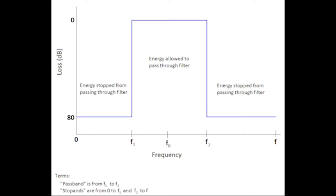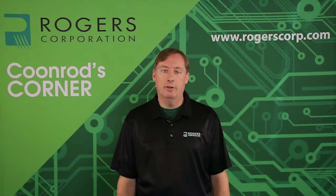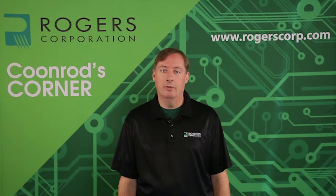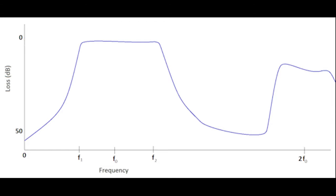In reality, the insertion loss looks a little different from that idealized depiction. Let's take a look at a more realistic depiction of a bandpass filter. From zero to F1 in the stop band, it doesn't have that flat and abrupt response — it has some curvature, which is normal. In the pass band region from F1 to F2, there is a slight slope where the insertion loss increases over a wide range of frequencies, and that's also normal. To the right of that, F2 is another cutoff frequency, and the stop band goes down to about 50 dB of loss, which in the real world is considered very good — the filter is shutting off energy from passing through those frequencies.